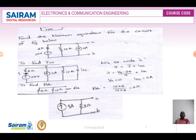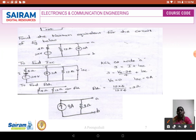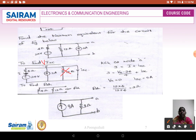Now, find the Norton's equivalent for the circuit shown. The circuit has a current source. The load resistance is short circuited. When short circuited, there is no current flowing through that branch, so that resistance can be eliminated. Assuming current I and ISC, the sum of incoming currents is 3 amps and the outgoing current is I plus ISC. The voltage at the node is VA. So VA minus 24 divided by 4 plus ISC equals 3. Since VA is connected to ground, VA equals 0.